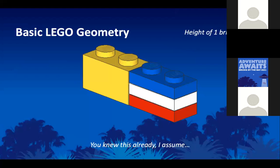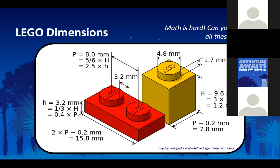The first section we're going to talk about is the basic relationship between LEGO parts. Everybody should know by now that three plates equals a brick. If you don't know that, you might be in the wrong group. The dimensions, however, are of course a lot more subtle than that, and this diagram illustrates just how complex it is.